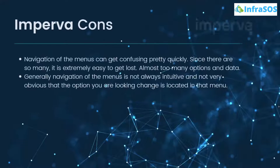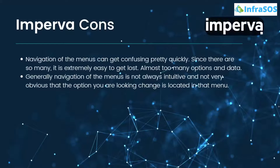Some cons of Imperva include that navigation of the menus can get confusing pretty quickly — since there are so many options, it is extremely easy to get lost. There is almost too much data available on the dashboard, and generally, navigation of the menus is not always intuitive, making it difficult to locate the options you are looking for.